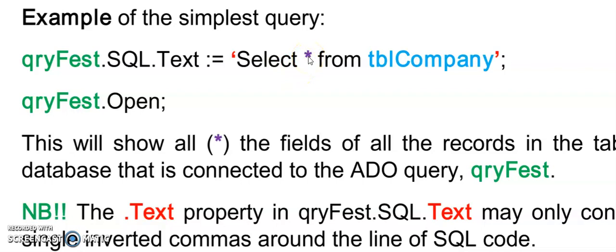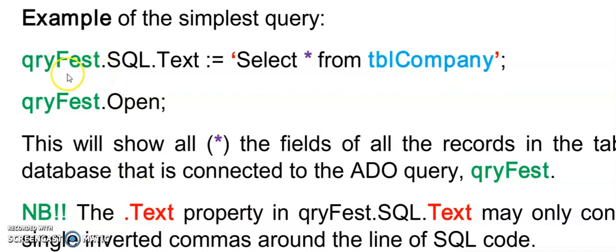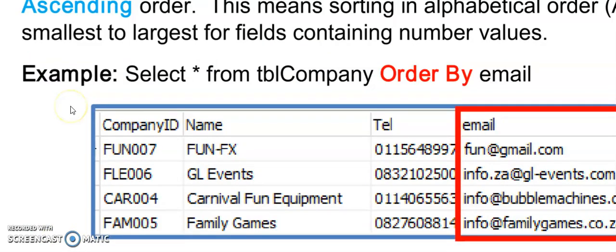This star here indicates 'show me all the fields.' A SELECT is followed by FROM and then the name of the table. This table name comes from my database — inside Access I have named this table TBL_Company. From the next example onward I'm only going to show you what goes after the assignment statement in inverted commas. Here is an example of me sorting my table according to an email address.